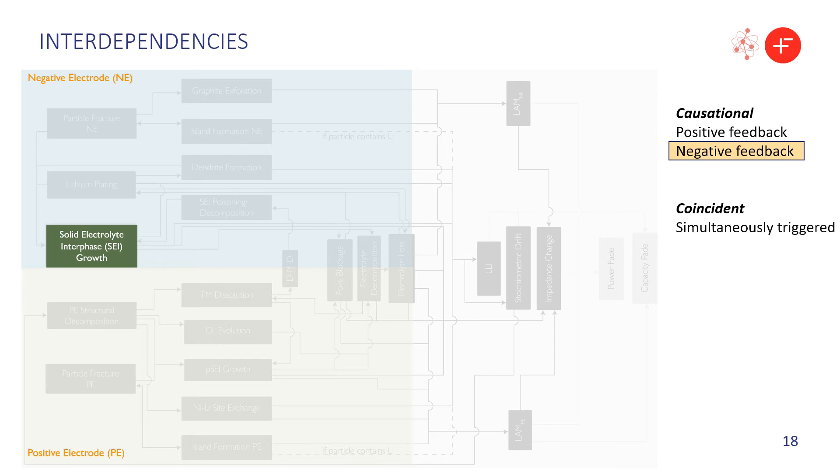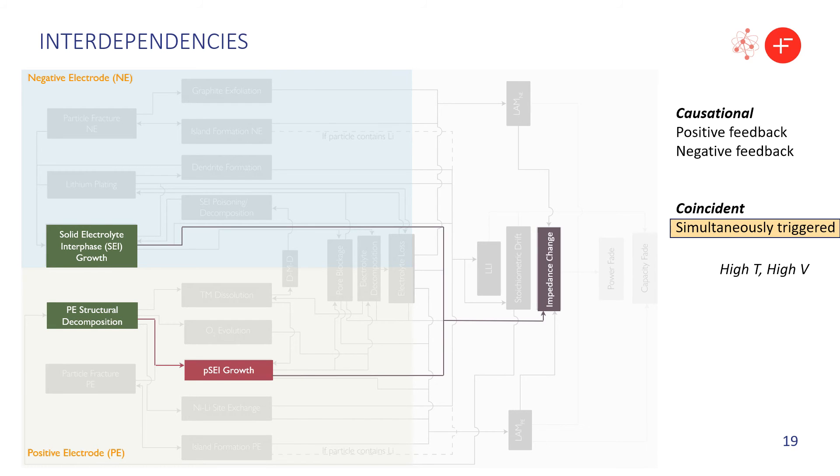Here we pose an example of negative feedback. SEI growth contributes to loss of lithium inventory. This may increase the potential of the negative electrode and actually inhibit lithium plating. And finally, an example of simultaneous triggering. High temperature and high voltage will increase chemical reaction rates and accelerate both SEI and PSEI growth. These both lead to an increase in impedance and subsequent power fade. The same conditions also accelerate exchanges of nickel for lithium in the positive electrode, which contributes to loss of lithium inventory and stoichiometric drift, both of which result in capacity fade. Therefore, it can be quite difficult to separate out which mechanism causes what, especially as they both contribute to the same observable effects.